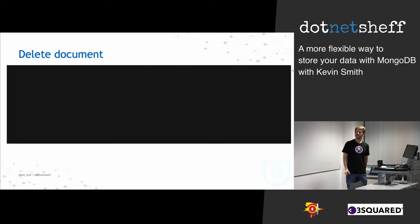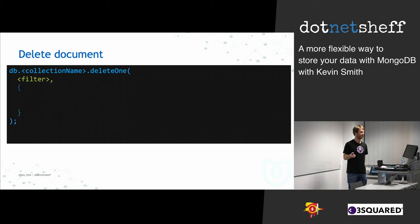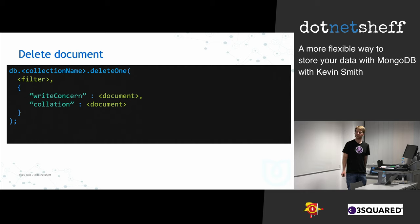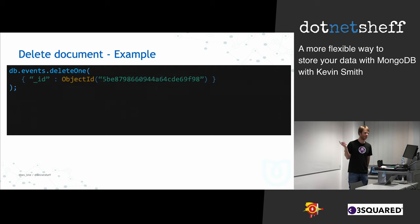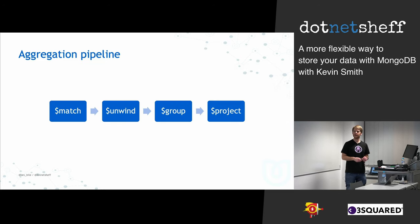To delete a document, it's similar to the find method. You call deleteOne on a collection with a filter — the same filter as find — and pass in write concern for how you want to acknowledge the delete, as well as collation for language rules. A simple example: delete one document with a specific ID, and it's deleted.